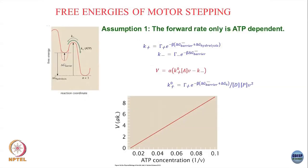I will make two simple approximations without biological motivation, simply because the maths is easier. First assumption: only the forward rate depends on ATP concentration and the backward rate does not. Second assumption: only the backward rate depends on ATP concentration and the forward rate does not. For the first case, the forward rate is ATP-dependent, meaning this valley in the free energy landscape moves up and down as I change the ATP concentration.